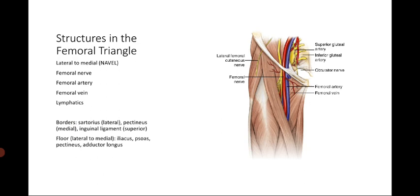For the structures in the femoral triangle, from lateral to medial, the mnemonic we use is NAVEL: femoral nerve, femoral artery, femoral vein, empty space, and lymphatic vessels on the most medial side. The femoral triangle is bordered by the sartorius laterally, the pectineus medially, and the inguinal ligament superiorly. The floor, from lateral to medial, is composed of the iliacus, psoas, pectineus, and adductor longus.